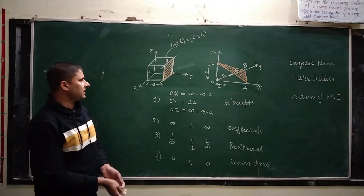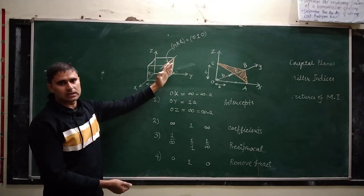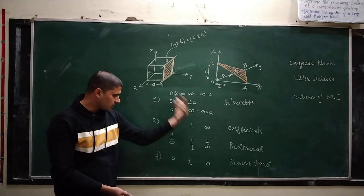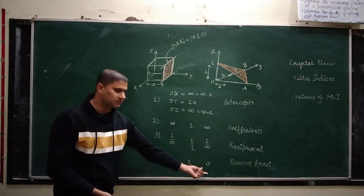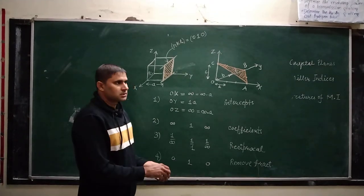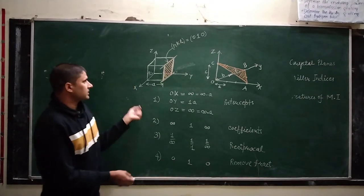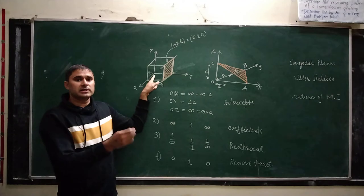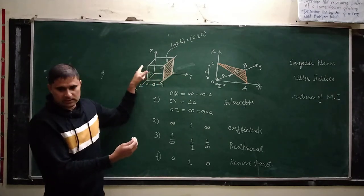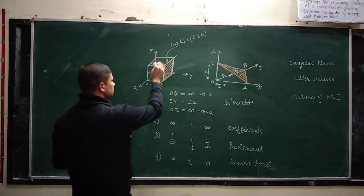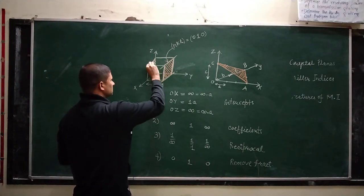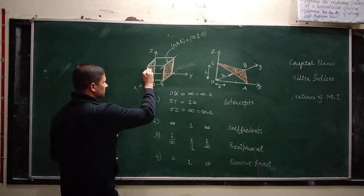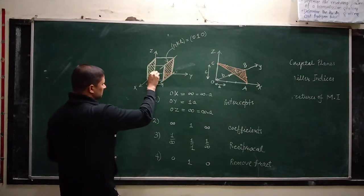Now we are to see that if any plane is passing through the origin, then how we will decide the Miller indices. So in this case if I take another plane — this one which is in the XZ plane — this plane is in the XZ plane. Here also this plane is parallel to this one.